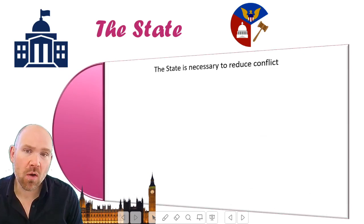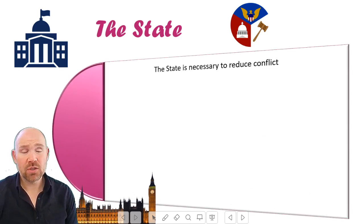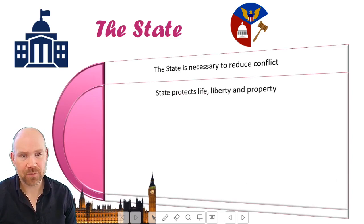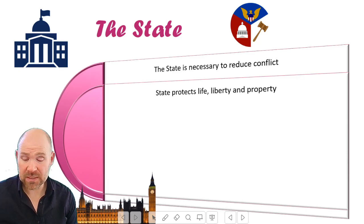Let's start with some of the agreement. All liberals would agree that the state is necessary. Why? To reduce conflict. They don't want a huge state such as what socialism might advocate, and they also don't want no state such as you might see under anarchism. They believe the state is necessary but it's going to be relatively small, though there'll be disagreement as to how small. The state is there to reduce conflict, to keep us safe, and to protect life, liberty, and property.